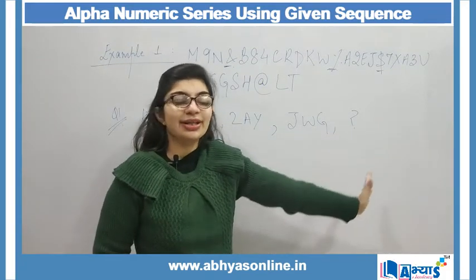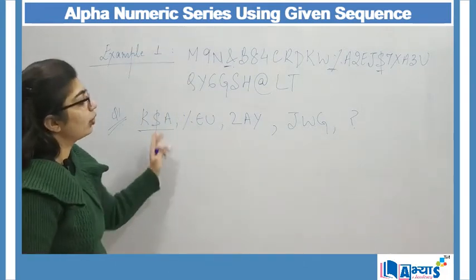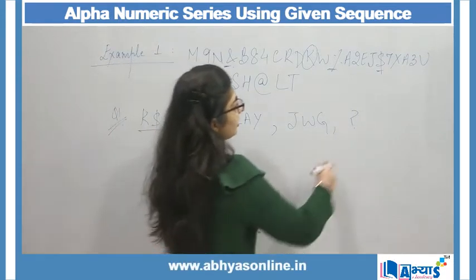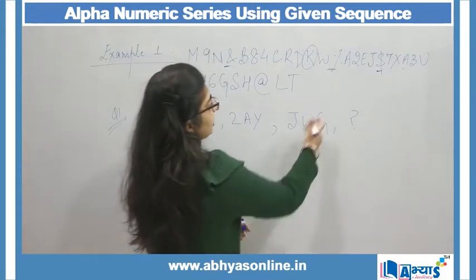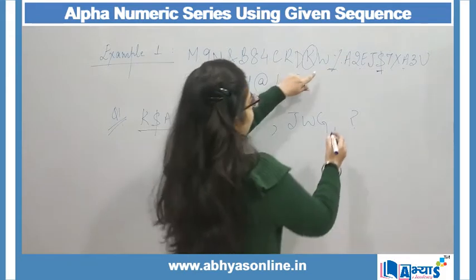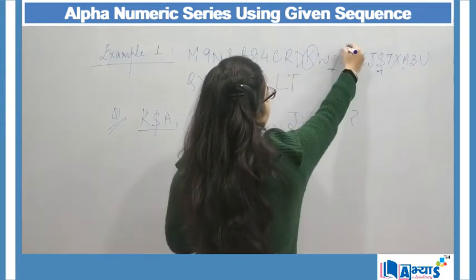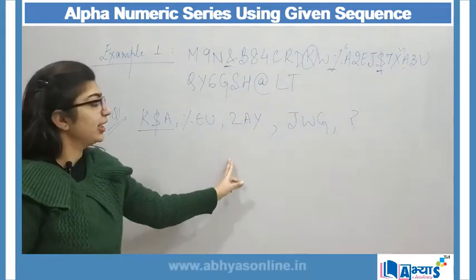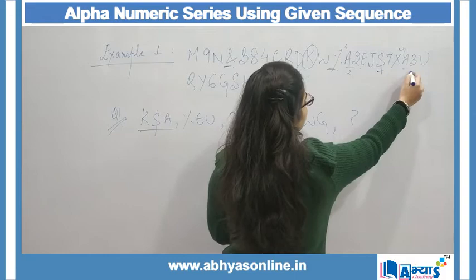From this series, we have to find the next sub-series. First is: K dollar A. I will find K over here — this is my K, next is dollar, and then this is A. Next is: percentage E U — this is percentage, E, and U. Now checking gaps: 1 2 3 4 5 6 — there is a gap of 6. Then 1 2 3 4 — there is a gap of 4. Then percentage E U — gap of 6 again.